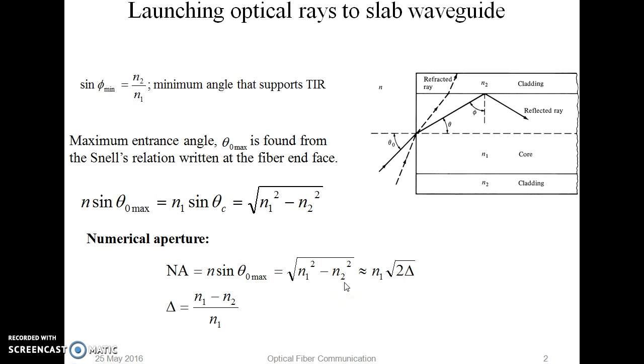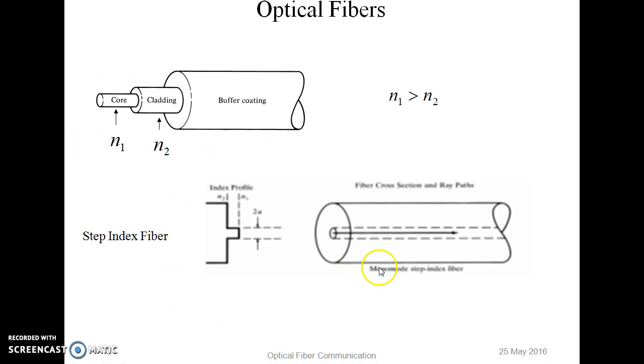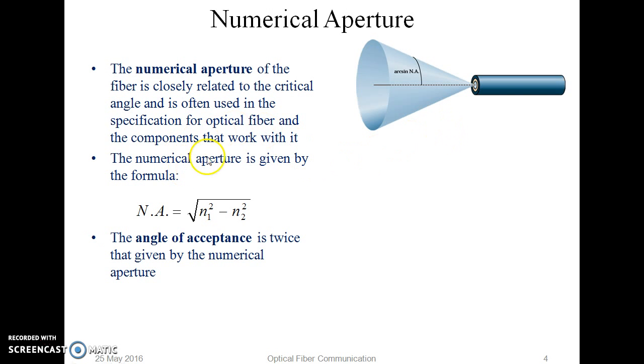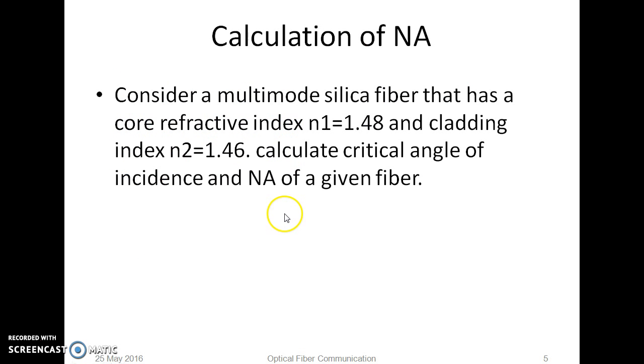Similarly, we have seen the relation between n1 and n2. Numerical aperture is defined as a figure of merit for an optical fiber which can be expressed by using the formula given as square root of n1 square minus n2 square. Now let us consider how to calculate numerical aperture in this example.